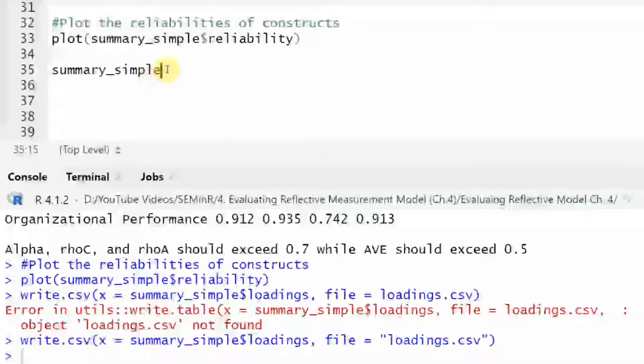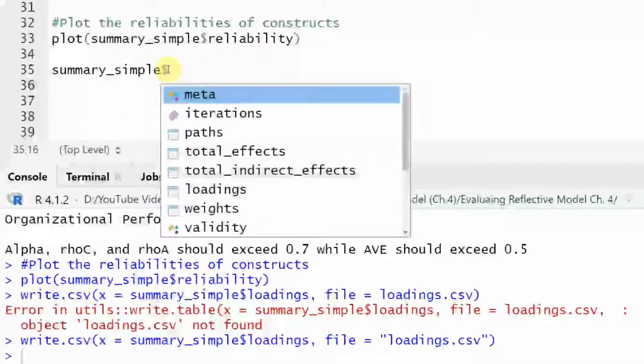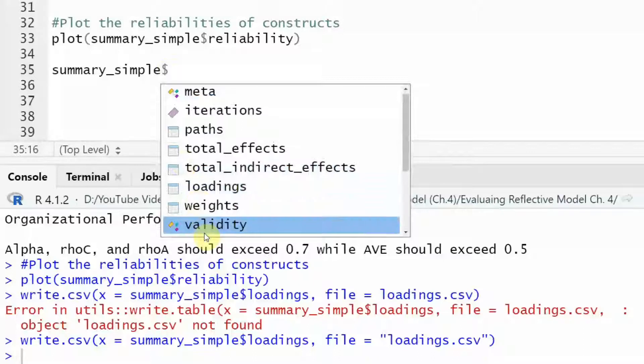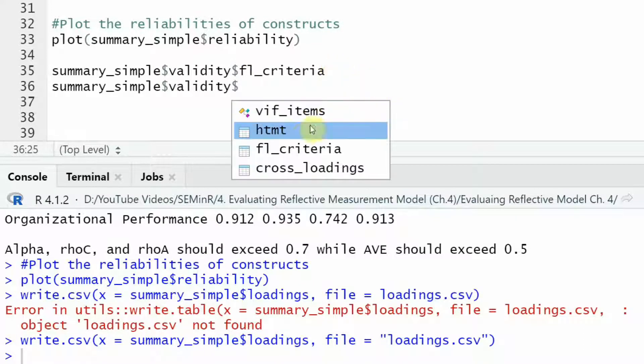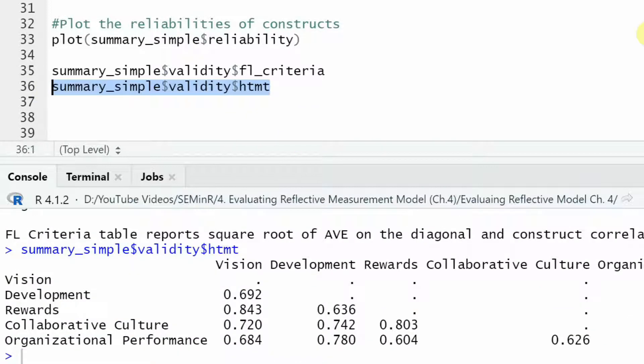Let's retrieve our HTMT values. Let's add a dollar sign. And what do I want? I want validity. I want HTMT. Let's run HTMT. Look at this. All of it is less than 0.85. Although this is approaching 0.85, but it's not 0.85. It's less than 0.85. This shows that discriminant validity is established through HTMT as well.